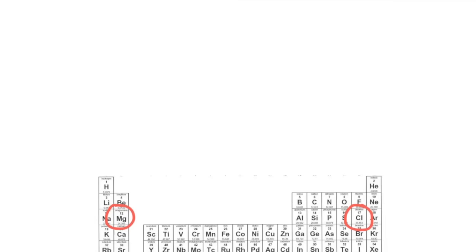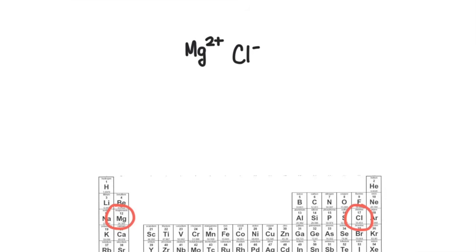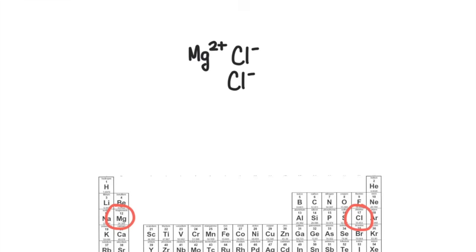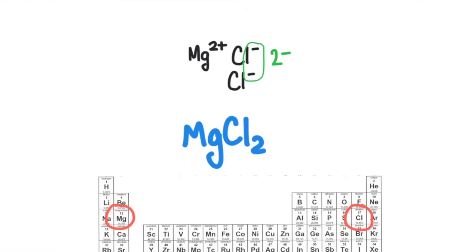Magnesium forms a cation with a 2+ charge, and chlorine forms an anion with a −1 charge. When these two ions meet, they do not naturally balance each other out. So another chloride ion will come in to give an overall negative charge of 2−. So one magnesium and two chlorides will stick together to form the compound MgCl₂, magnesium chloride.